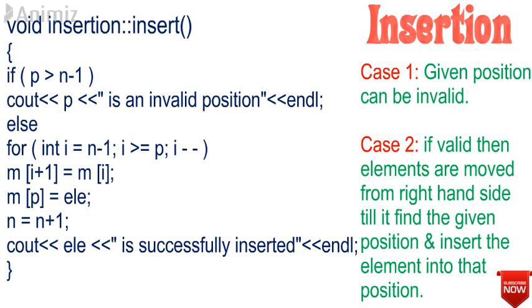We need to free memory at the position where the new element has to be inserted. This is done by shifting elements to the right using a for loop — for i equal to n-1, i greater than or equal to P, i minus minus. Then we add the new element in the freed memory space: m of P is equal to ELE. That is, ELE will be inserted at memory position m of P.